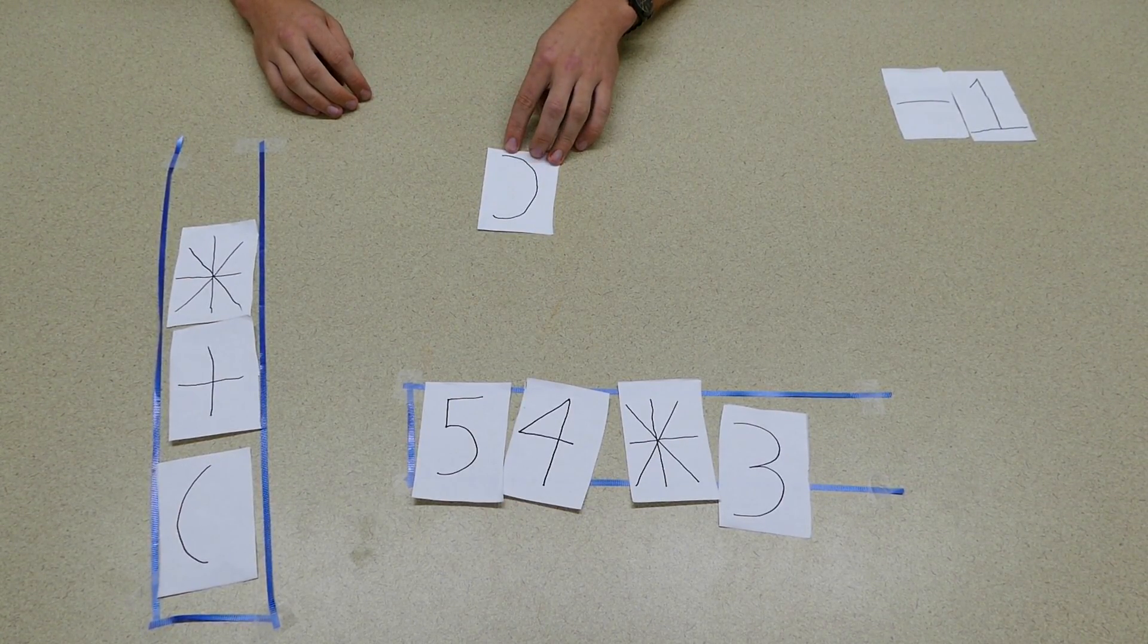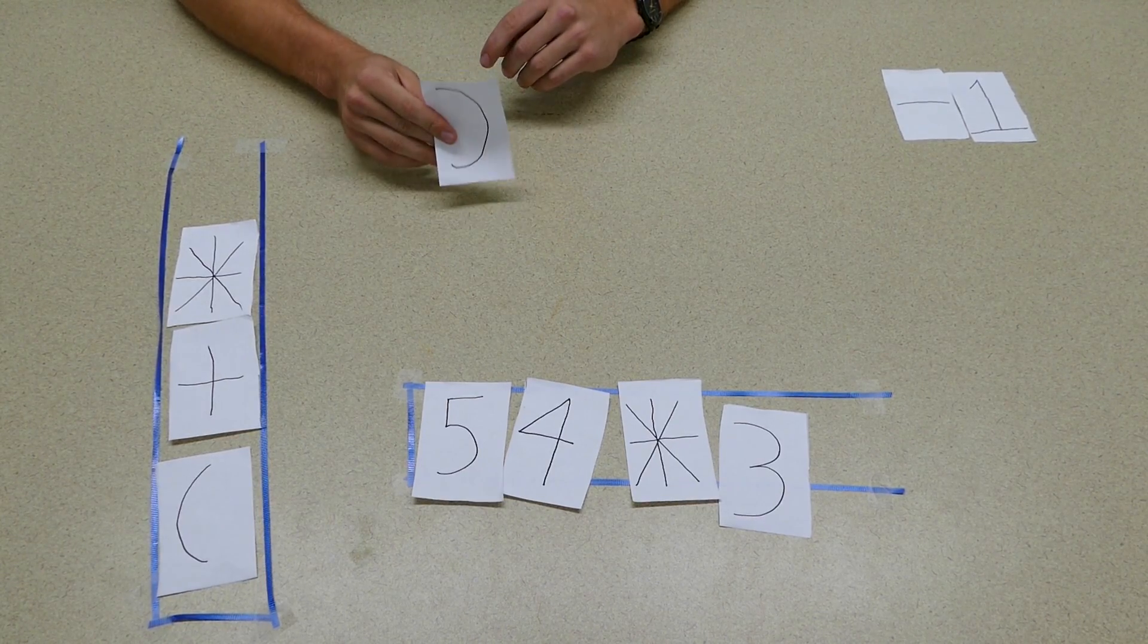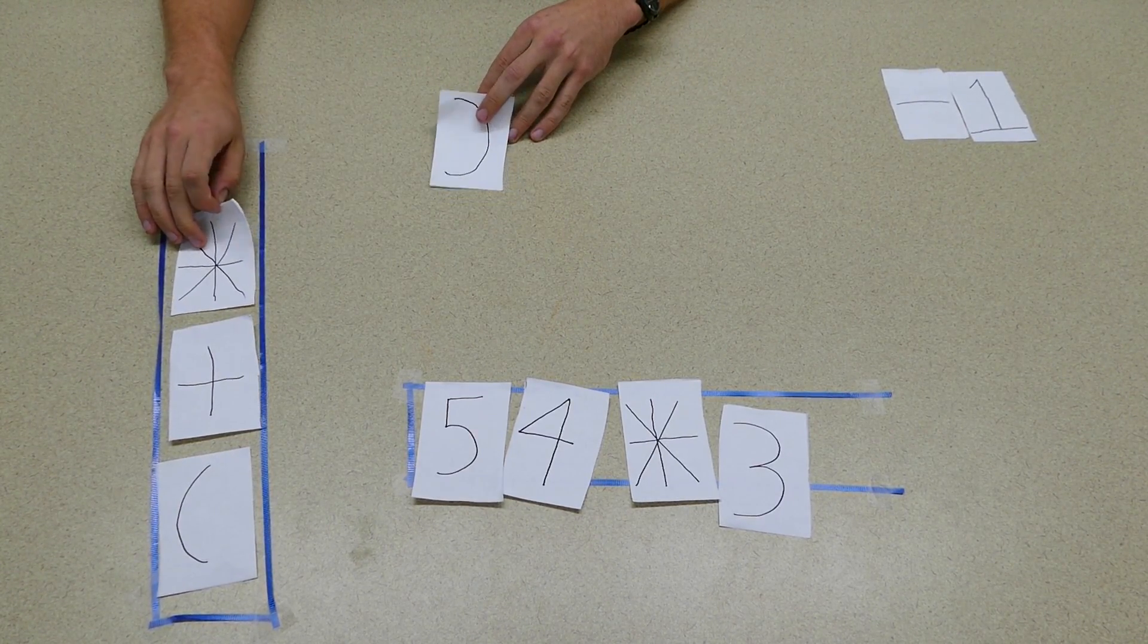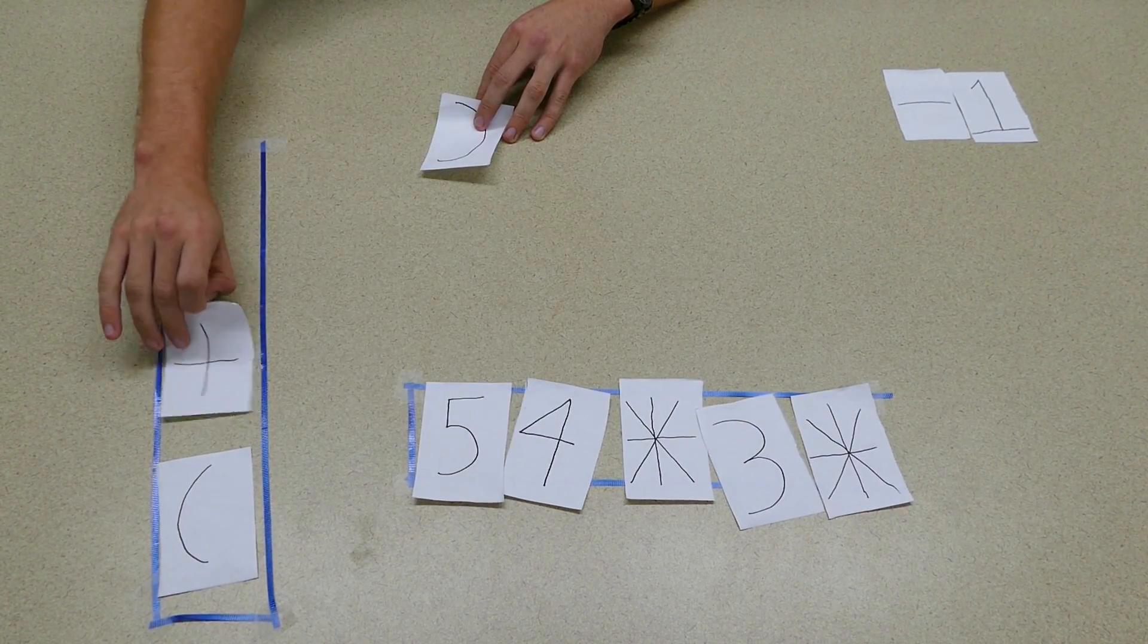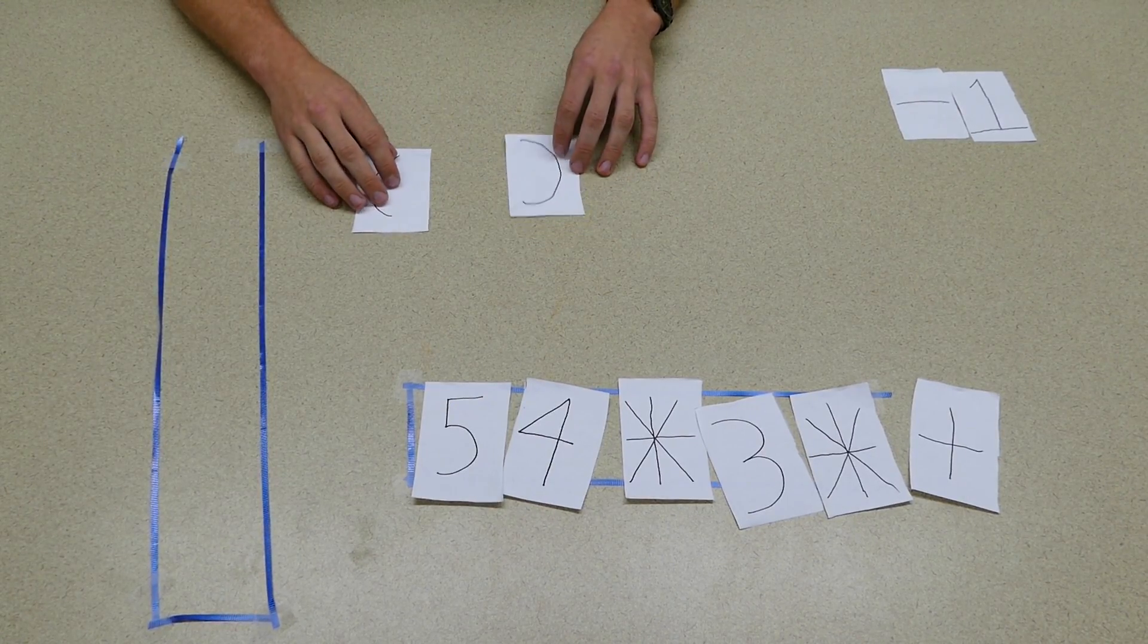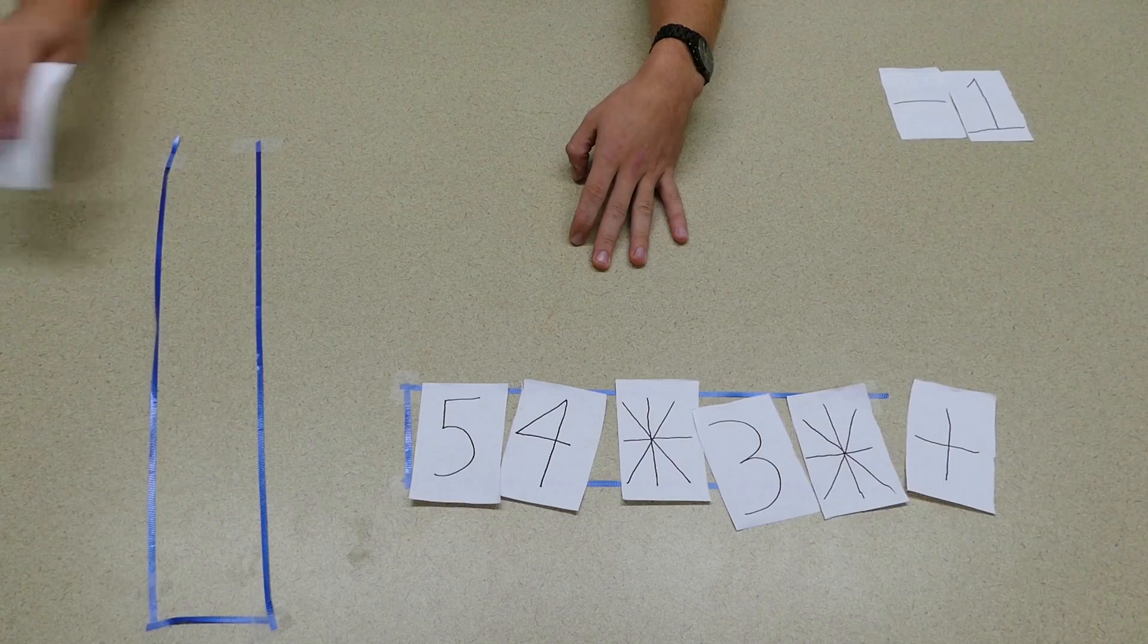The next symbol is a closed parenthesis. The rule with parentheses: whenever you're dealing with a closed one, you want to pop all the operators off the stack and enqueue them one by one. Pop and enqueue, pop and enqueue, until this guy's buddy—the open parenthesis—is found. At that point we discard them because we don't want them in the output queue.